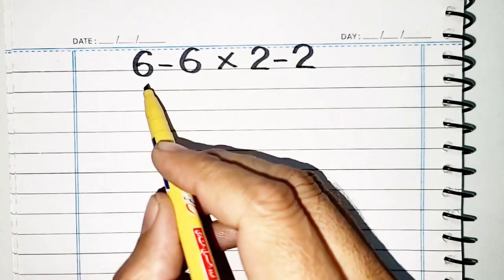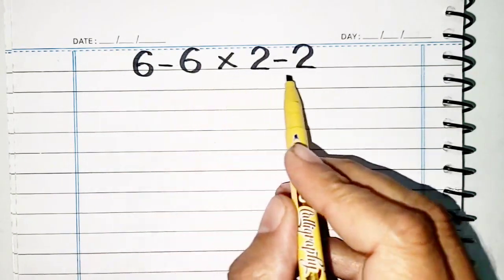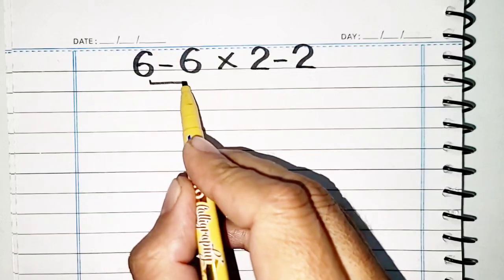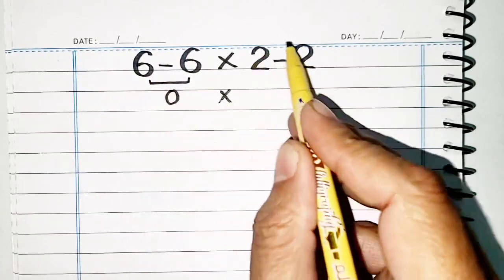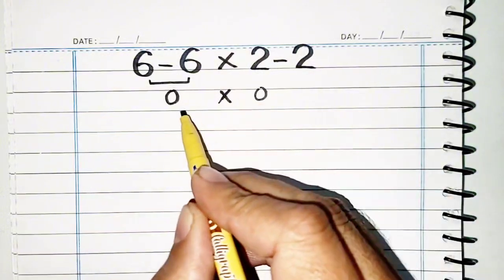Hello respectable audience. This question is 6 minus 6 times 2 minus 2. It is quite simple because 6 minus 6 is 0, and here 2 minus 2 is also equal to 0.